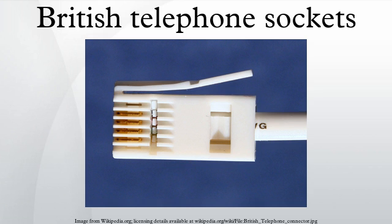Sockets, master socket and NTE5 line box. A domestic single British telephone line installation will have a single master socket or line box in the premises, which is provided by BT or another service provider. This socket is the demarcation point between the customer-owned and maintained on-premises wiring and the telephone network. For installations using the NTE5 line box, the demarcation point is actually within the socket — the lower half of the front plate and associated wiring belongs to the customer, while the permanent wiring on the non-removable section behind this remains the responsibility of the service provider.